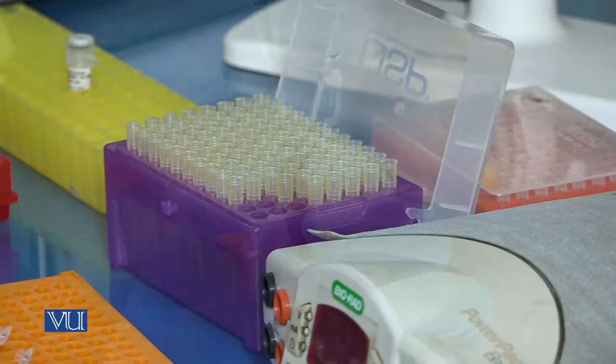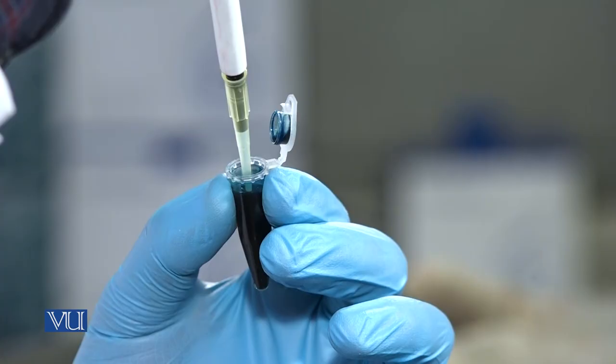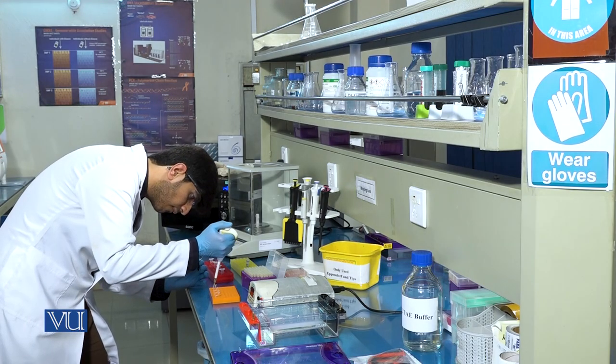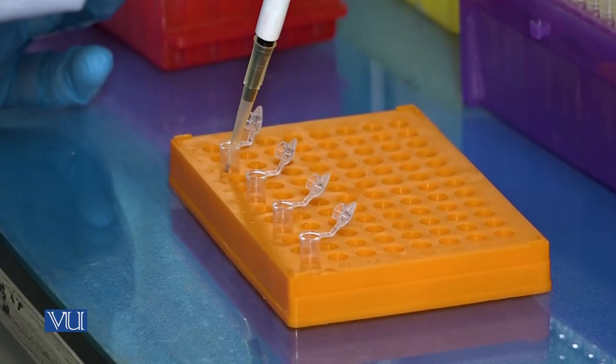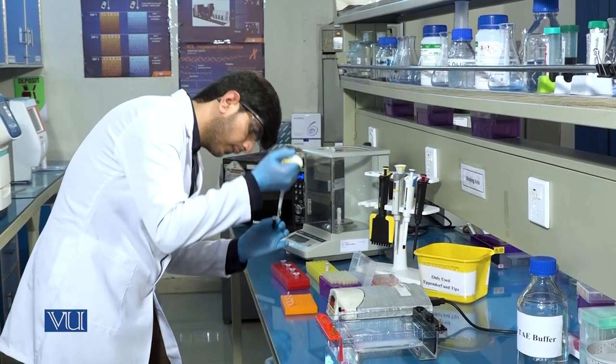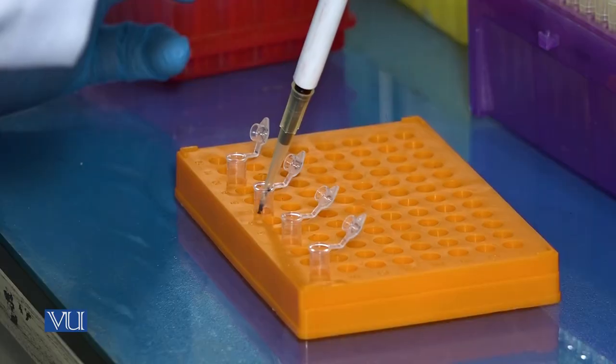For gel loading, 2 to 3 microliters of 6x loading dye and 4 to 5 microliters of DNA template will be taken in PCR microfuge tubes.